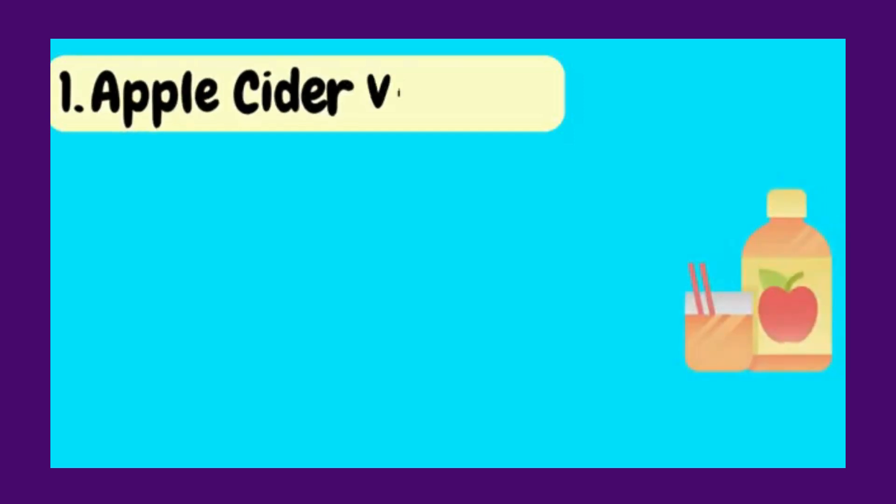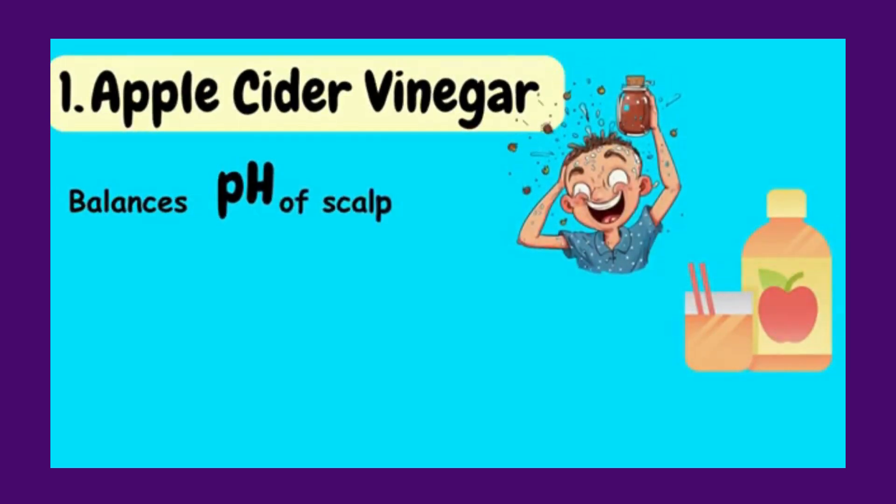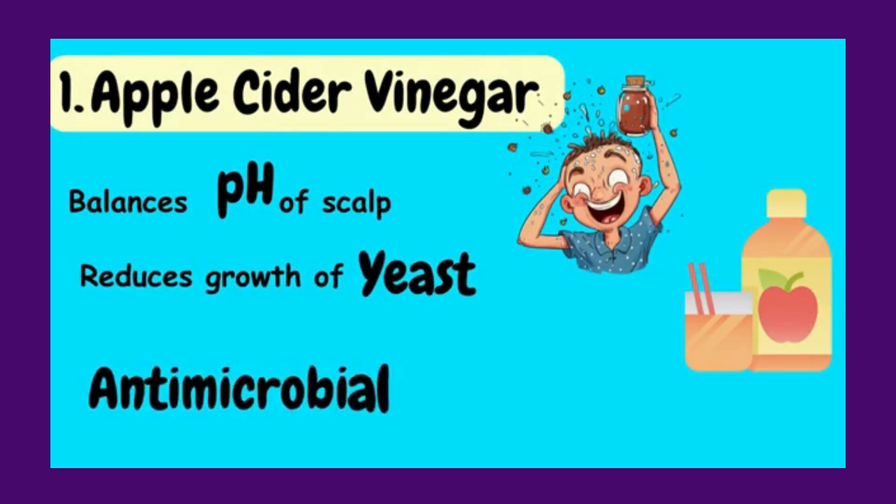First is apple cider vinegar. Apple cider vinegar helps balance the pH level of the scalp, which can reduce the growth of yeast that contributes to dandruff. It also has antimicrobial properties that can combat fungal infections.